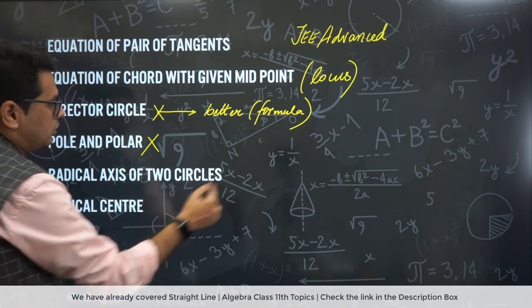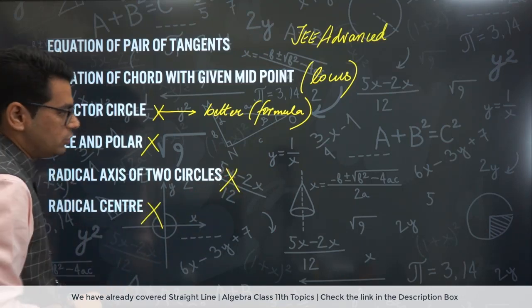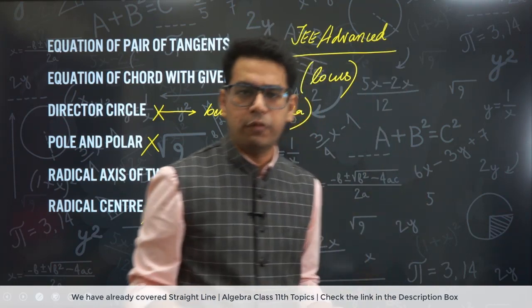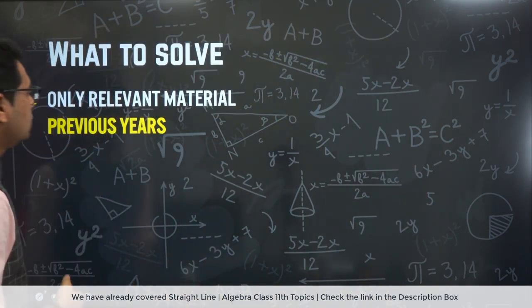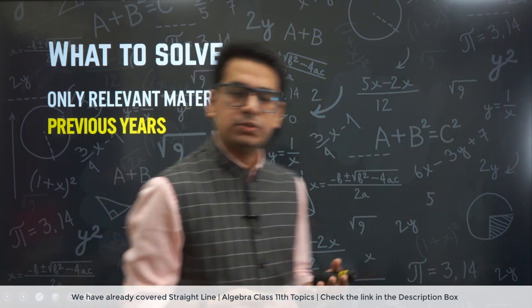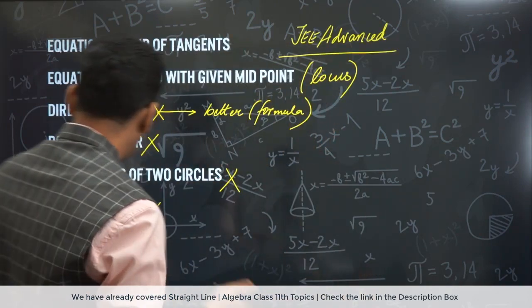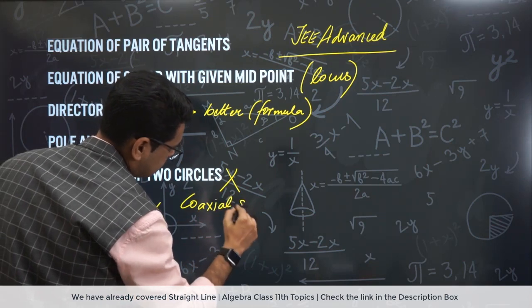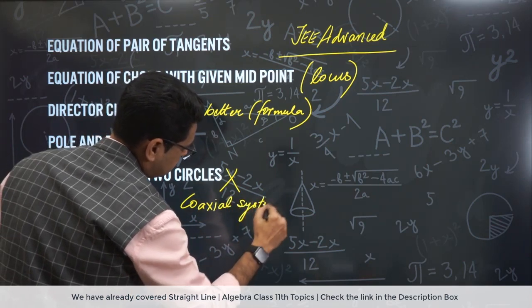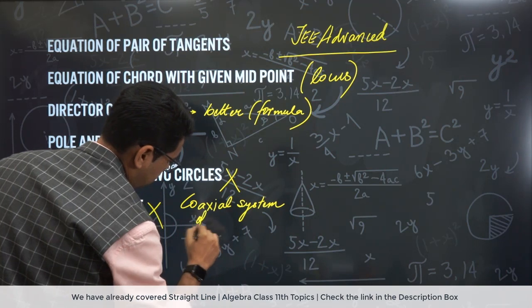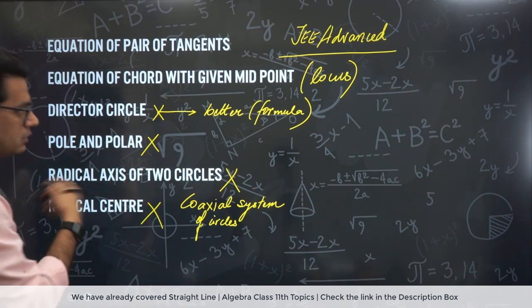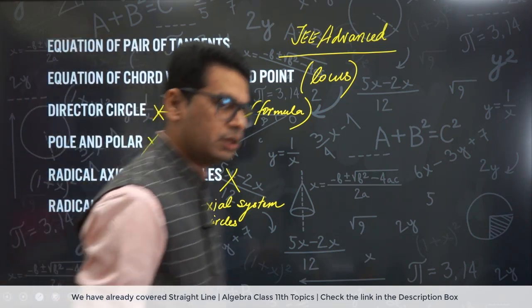Pole and polar you don't have to do. Radical axis and all these you have to do. These are topics for JEE Advanced only. Focus there. That will be better. Okay. So that is about the topics which we have done. There could be one more in this which I maybe didn't write. Coaxial system. Coaxial system of circles. Okay? Again that's a topic for JEE Advanced only. Okay. You don't need to study this for JEE Mains.